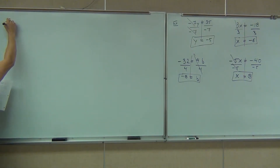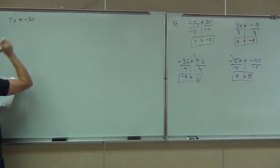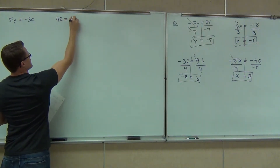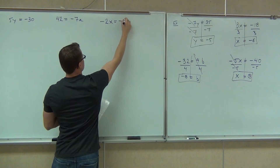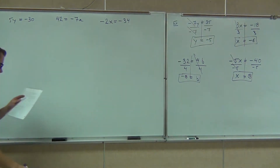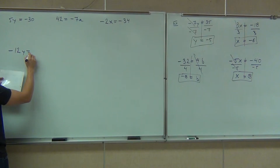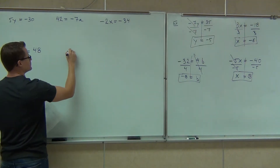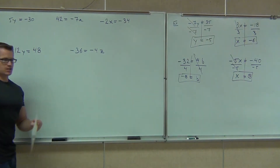Let's try these — show your work. I'll be walking around; if you're struggling, raise your hand and I'll come help you. The problems are: 5y equals negative 30; 42 equals negative 7a; negative 2x equals negative 34; negative 12y equals 48; and negative 36 equals negative 4z.